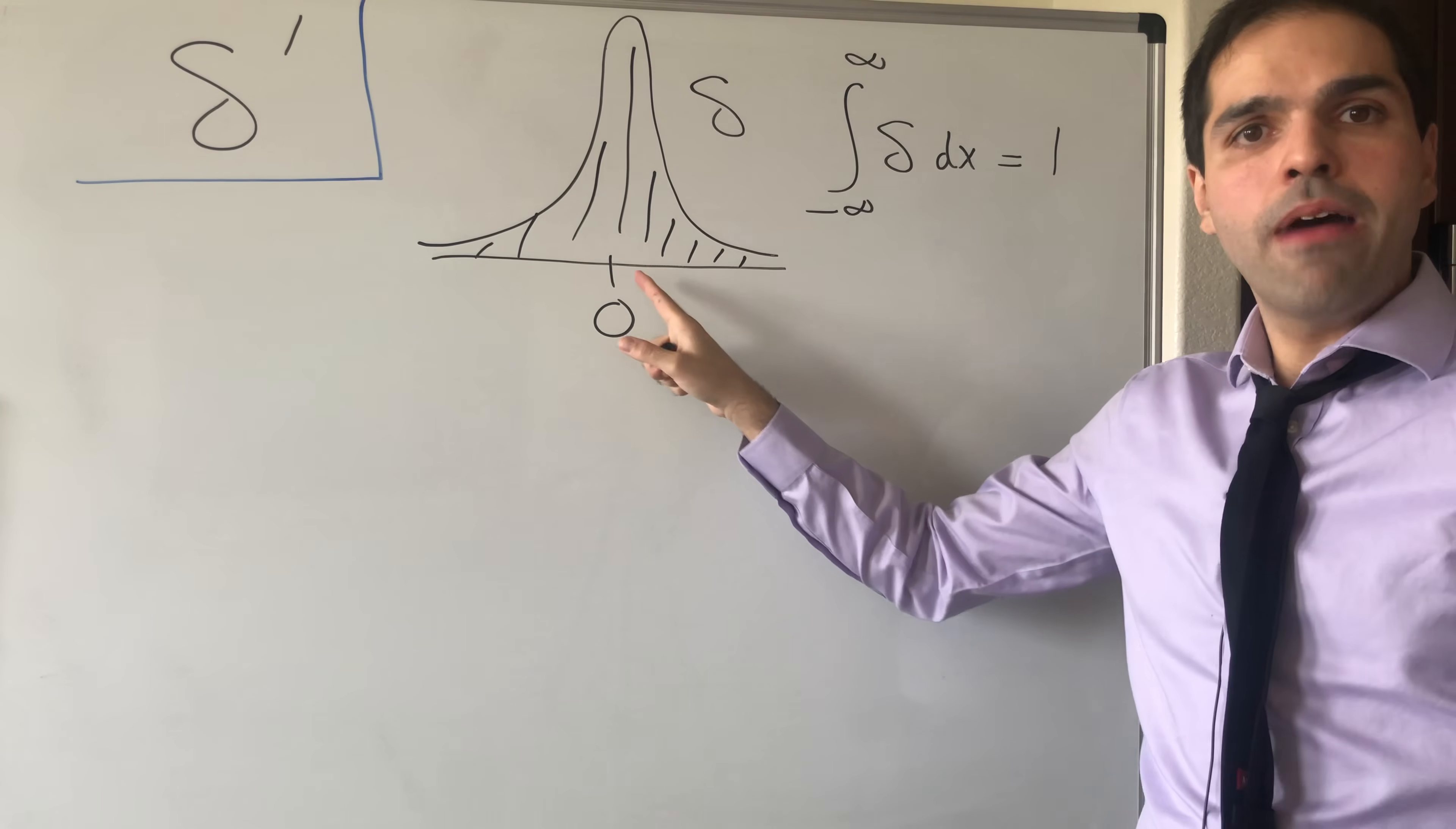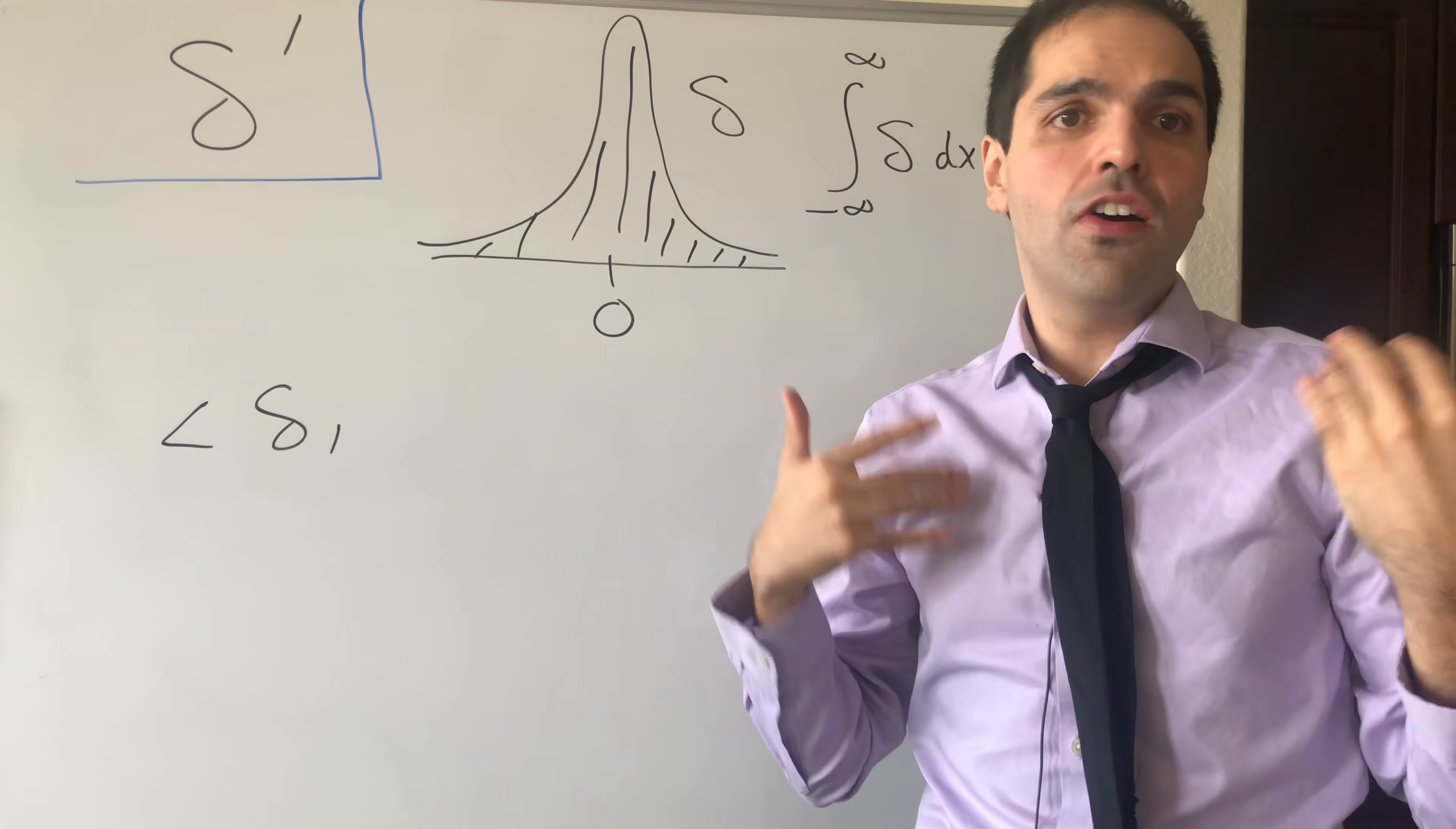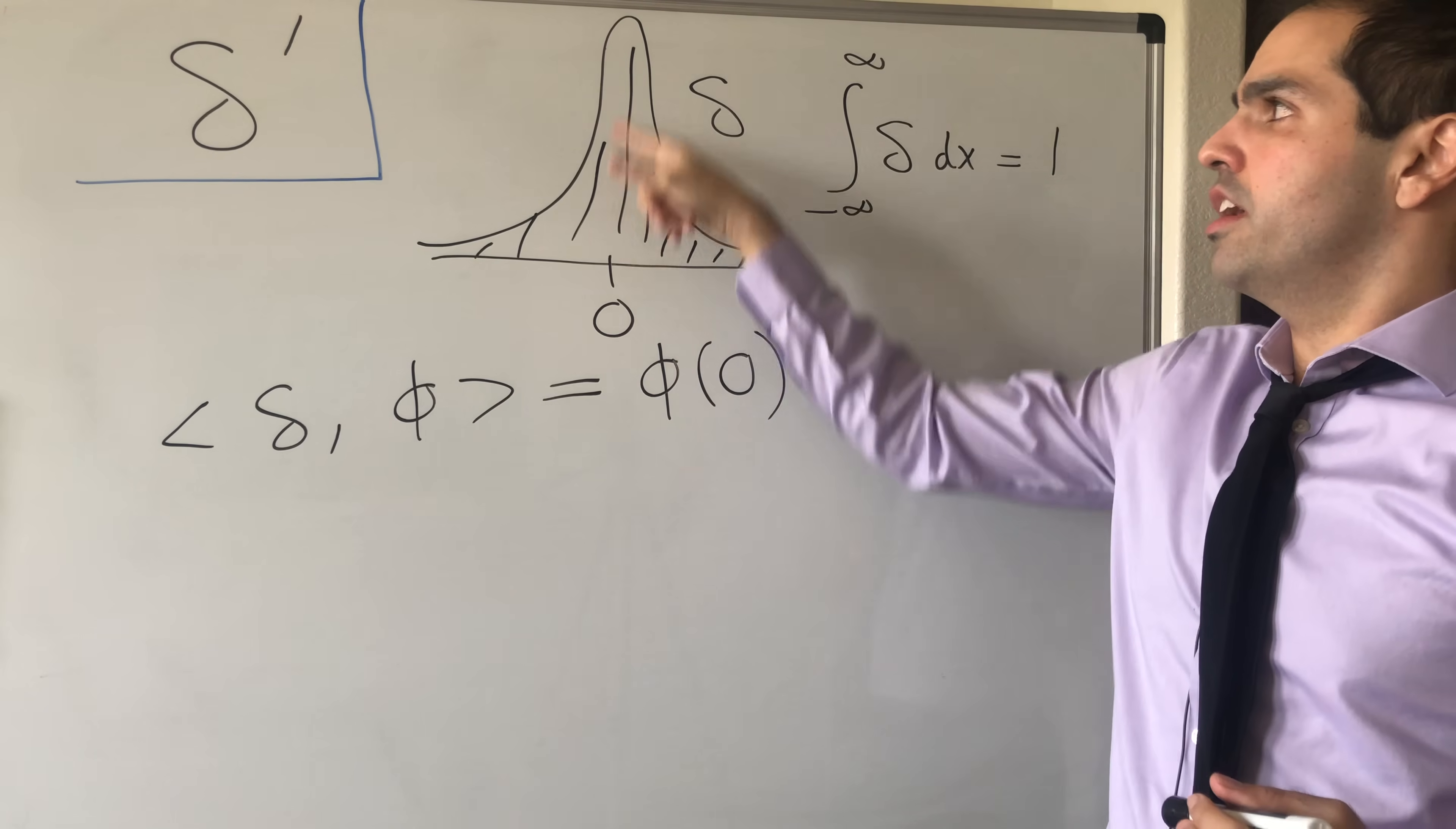So it's this unit mass that has mass one but which spikes at zero. But mathematically, the way you define it is as follows: the Dirac delta is this distribution, or this functional delta, which takes smooth functions with compact support as an input, so Dirac delta applied to phi, and spits out the value of this function at zero. Which makes sense because the Dirac delta concentrates function at the origin, just like this infinite spike.